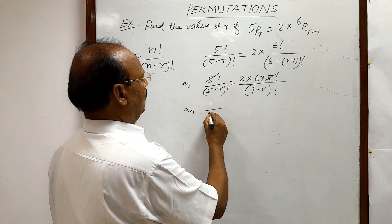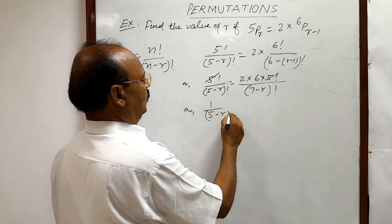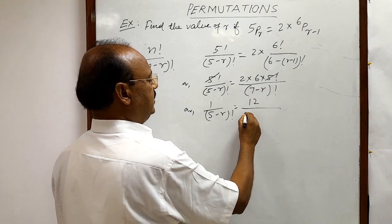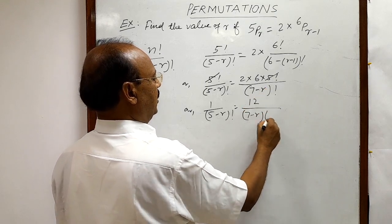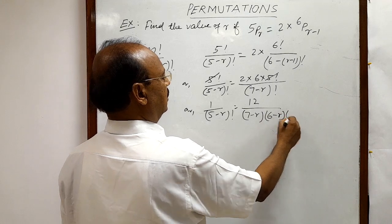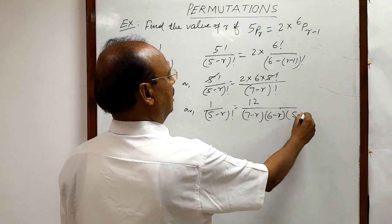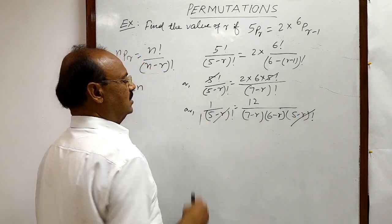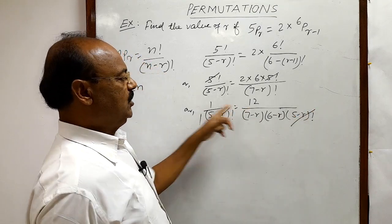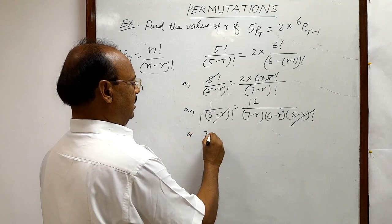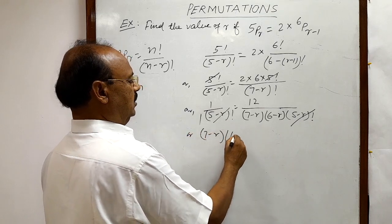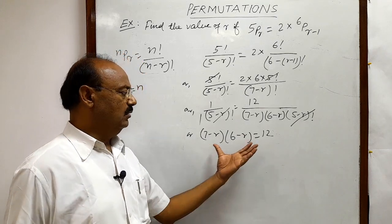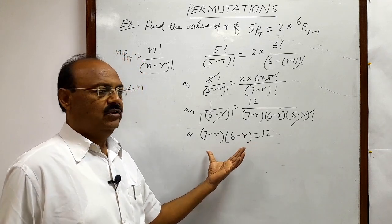So here this is 1 by 5 minus r whole factorial is equal to 2 into 6 is 12, and in denominator we can write 7 minus r into 6 minus r into 5 minus r whole factorial. So 5 minus r whole factorial will be cancelled out here. So by cross multiplication we are getting 7 minus r into 6 minus r, this is equal to 12. Now we have to solve this equation to get the value of r.